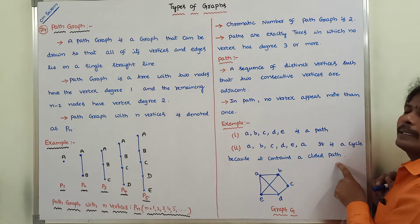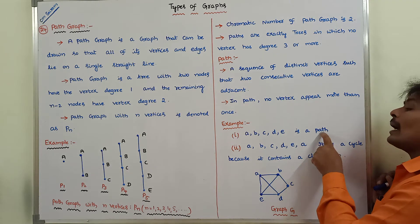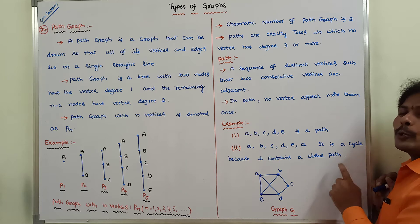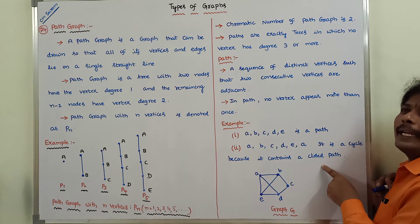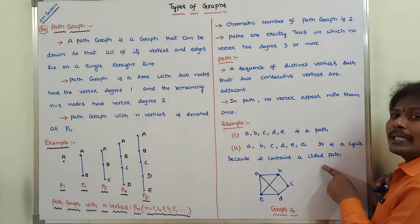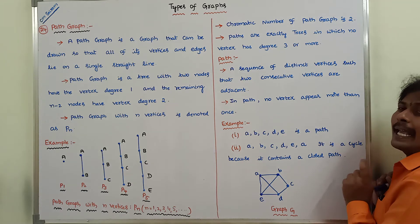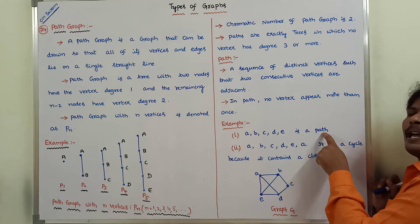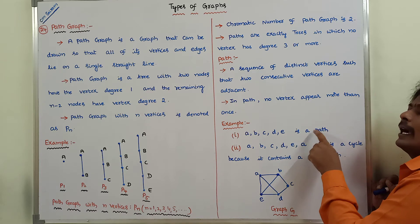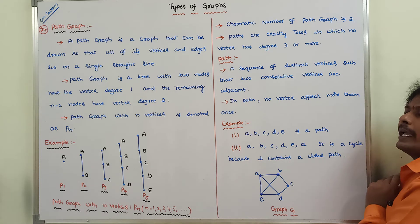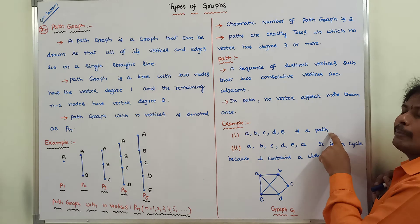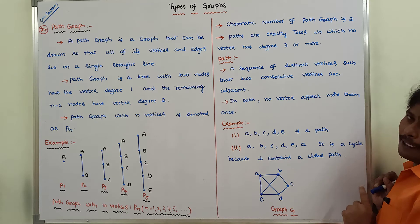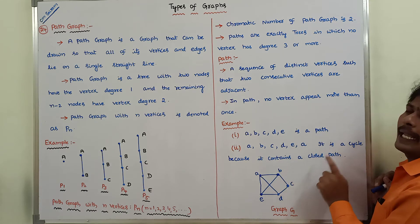A cycle contains a closed path, while a path contains an open path. What is the difference between them? In the closed path, starting vertex and ending vertex should be the same, and in the remaining vertices no vertex appears more than once except the starting vertex. In the case of an open path, starting vertex and ending vertex should not be the same, and all vertices are distinct.